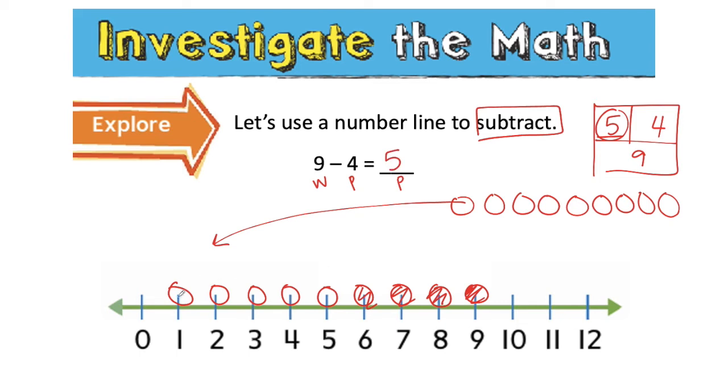But you know what? It took me a long time to line all these counters up, take away the part I knew, to find the part I didn't know. So just like with addition, instead of doing that, I could just take my pen and slide all the way up to my whole. Nine is my whole, so I'm going to slide until I get to nine. Just like when I was showing addition on my number line, I'm going to put this big dot to show where I started.